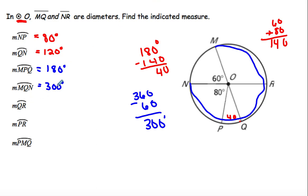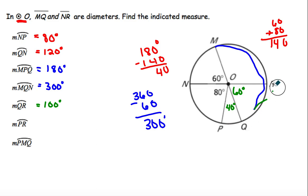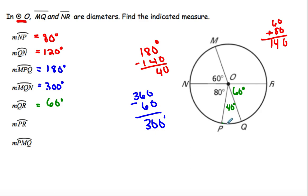The measure of arc QR: we know that the little piece is 40, since we found it before. Then for QR we need to find this piece — since 60 and its vertical angle are both 60, arc QR is equal to 60. Then for arc PR, we add those together: 60 plus 40 gives us 100 degrees.